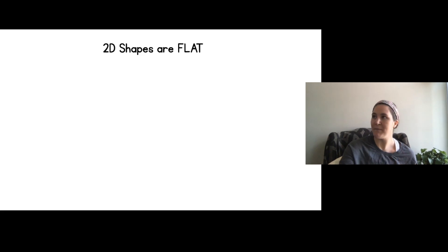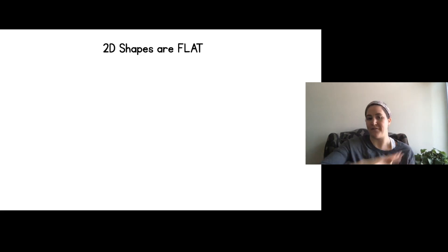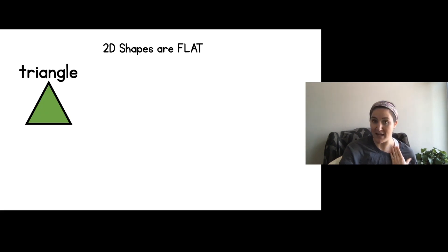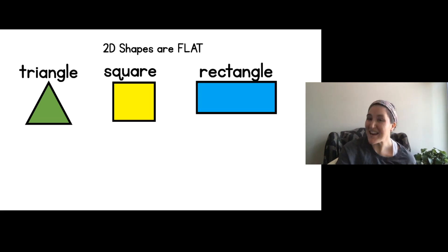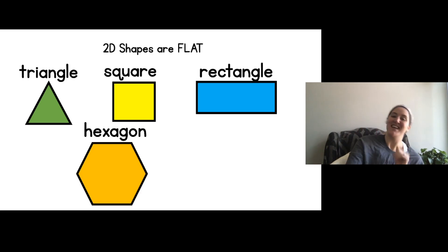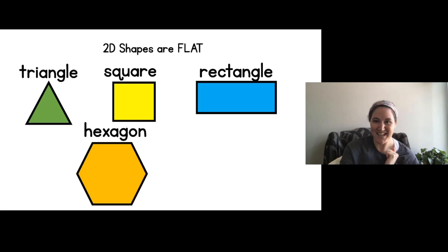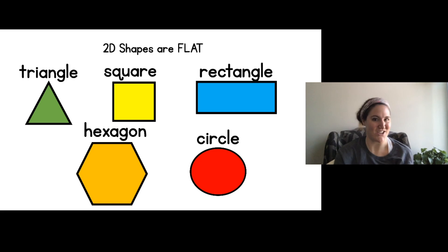So let's remember what our 2D shapes are. Our 2D shapes are flat. We have a triangle — say triangle, good. Say square, good. Rectangle — say rectangle. Hexagon — say hexagon. And circle — say circle.